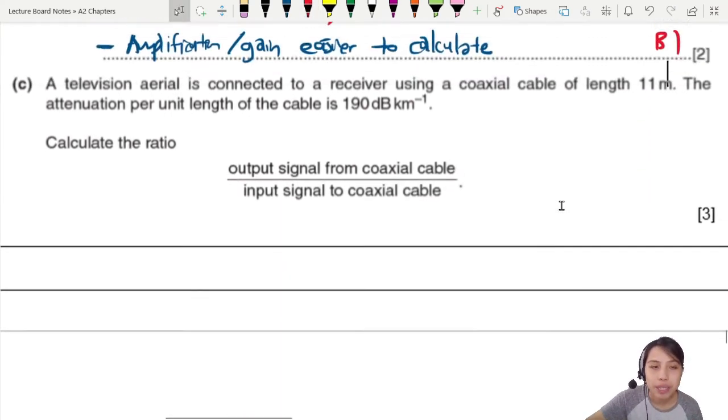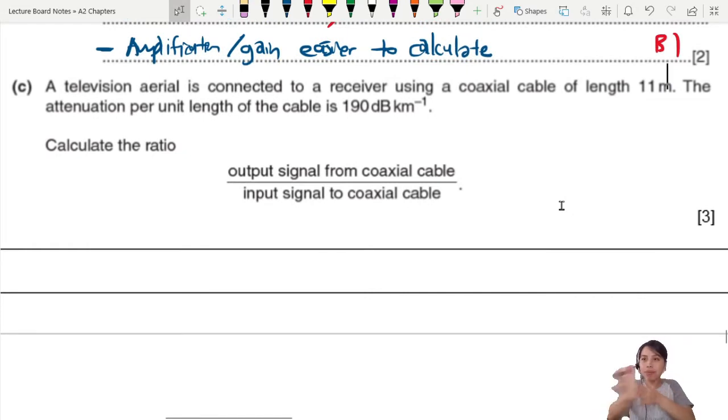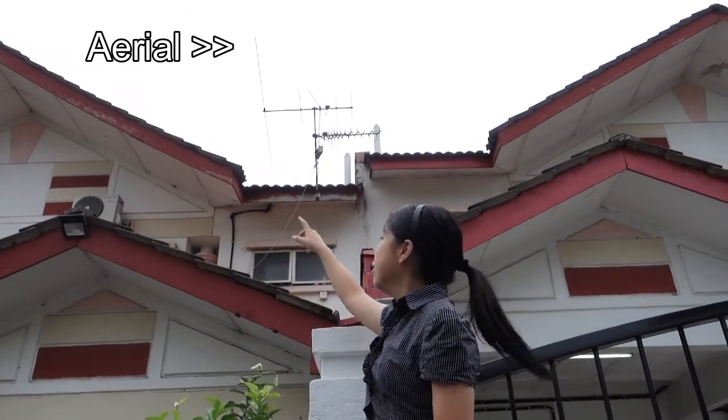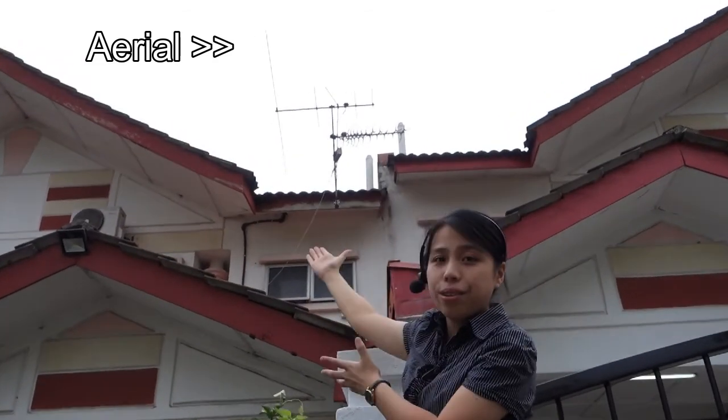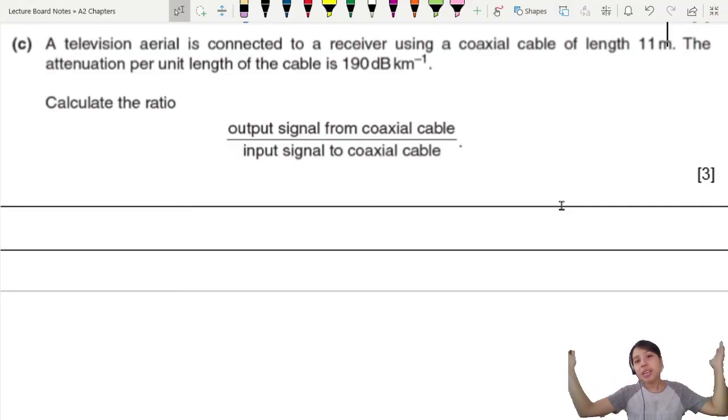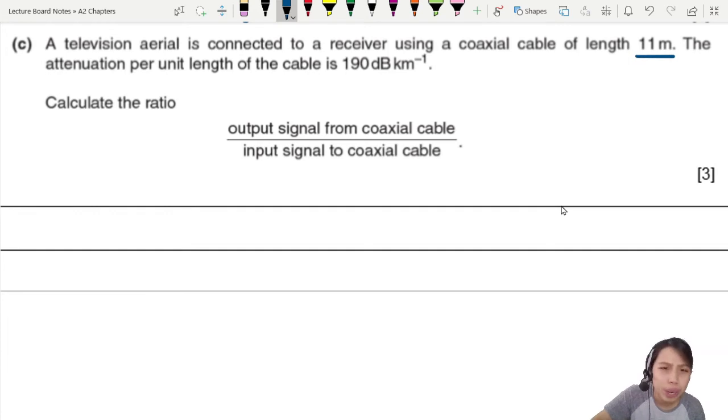Last part. Calculation. Let's go. TV aerial is connected to a receiver using a coaxial cable of length 11. So if you look behind me, you will see a TV aerial, a very old TV type. So if you notice, there are different lengths of it and some are shorter, some are longer for different wavelengths, different frequencies. Anyway, from the top of the roof to your TV is 11 meter. That one already can have signal loss.